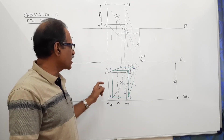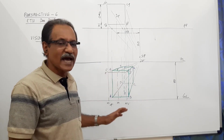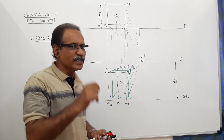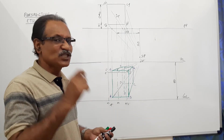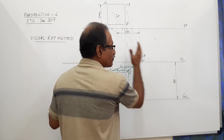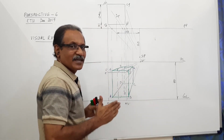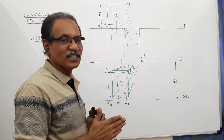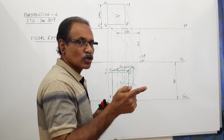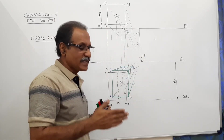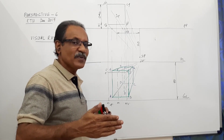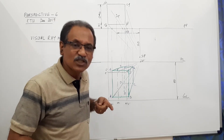So you have to be very careful to draw the elevation very lightly. If you do that, it will be very comfortable. A tip: visual ray method with elevation is preferred when the station point is away from the center of the object, and also when a side of the object is parallel to VP.